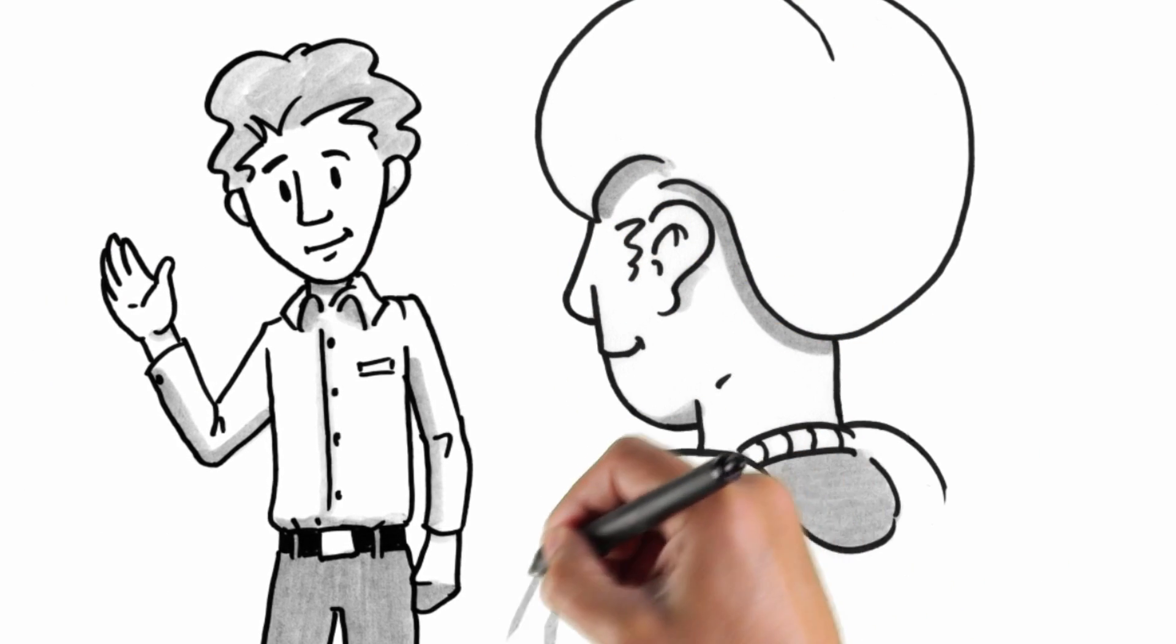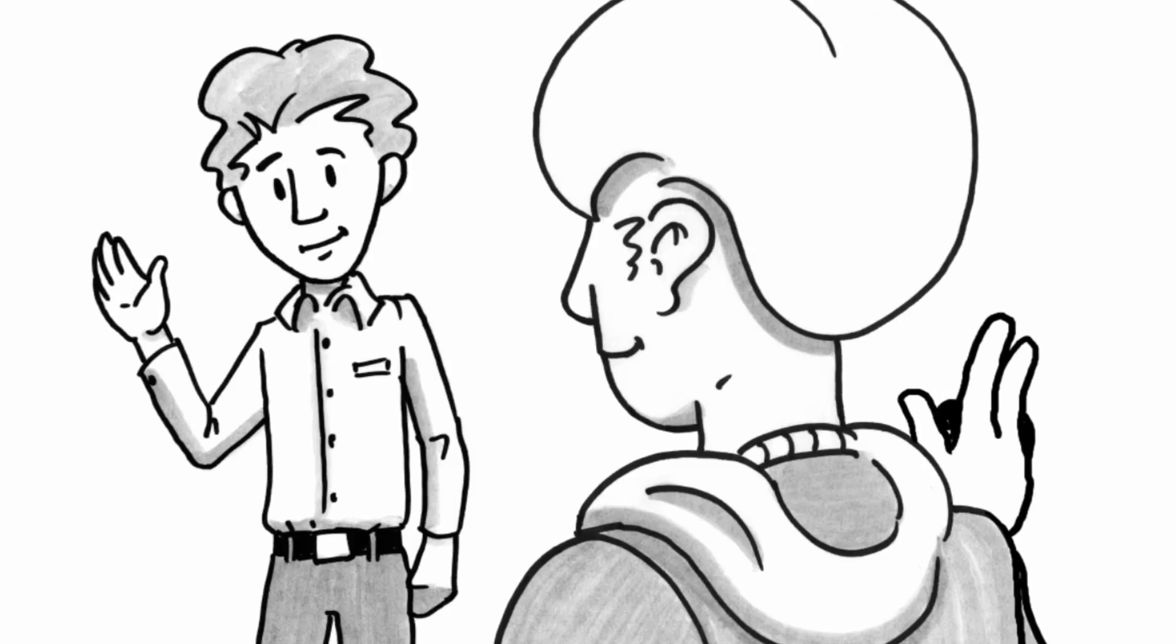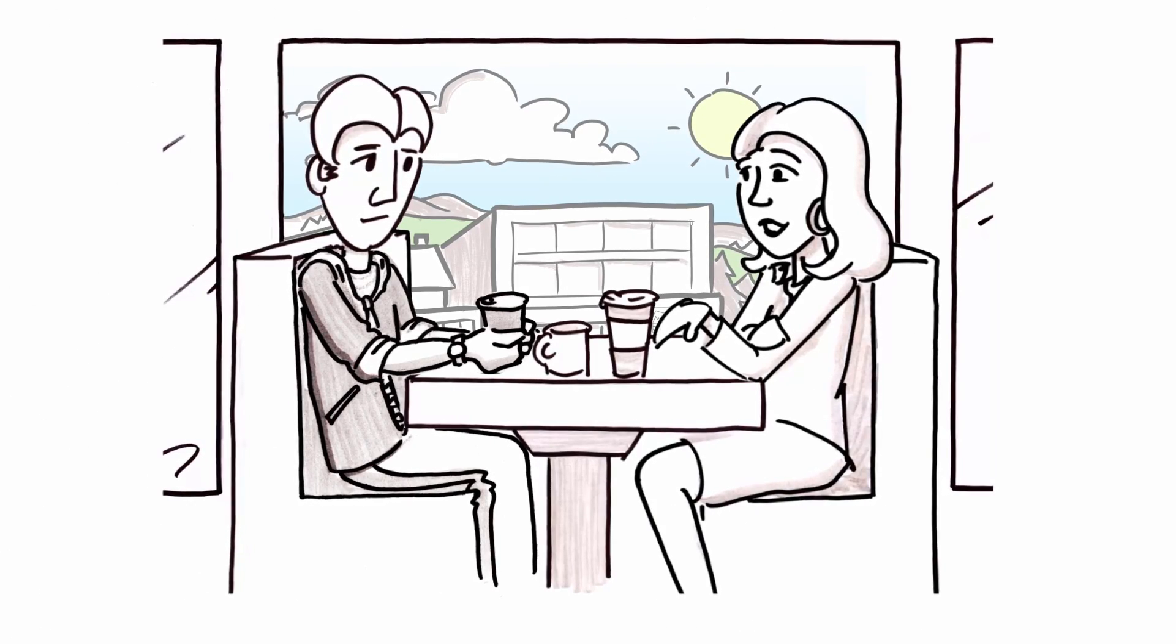Sean notices he's running late and excuses himself. Keith thanks him for his story. Rita asks what else Keith wants to know.